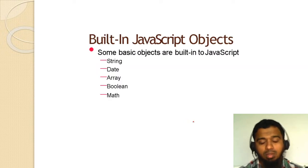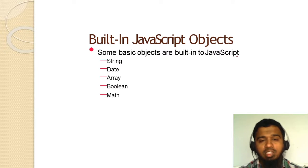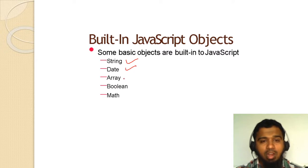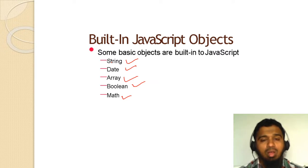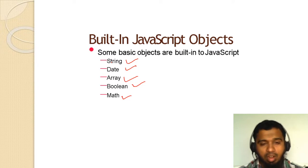The next topic is built-in JavaScript objects. Some basic built-in JavaScript objects are: String, Date, Array, Boolean, and Math.